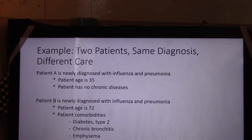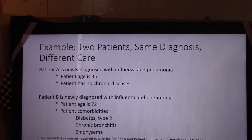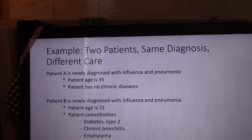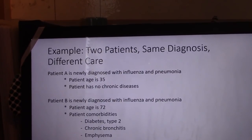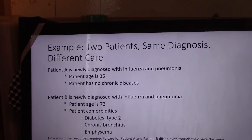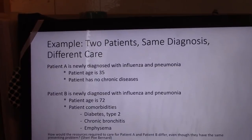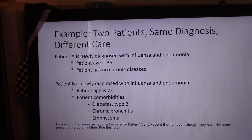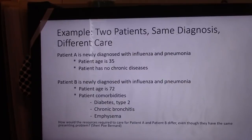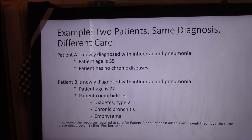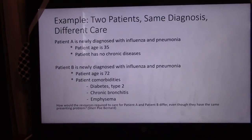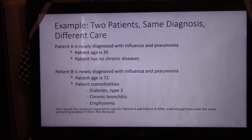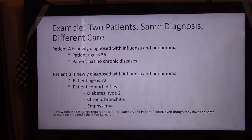Let me give you an example: two patients, same diagnoses, different care. Patient A is newly diagnosed with influenza and pneumonia. The patient is 35 years old with no chronic diseases. Patient B is newly diagnosed with the same diagnoses — influenza and pneumonia — but this patient is 72 years old and has comorbidities: diabetes type 2, chronic bronchitis, and emphysema. The question is: how would the resources required to care for patient A and patient B differ, even though they have the same presenting problem?